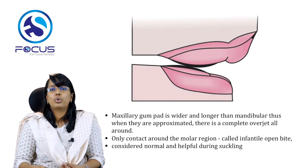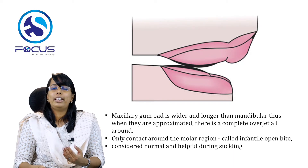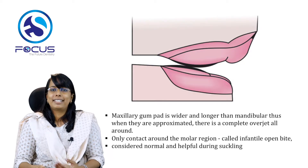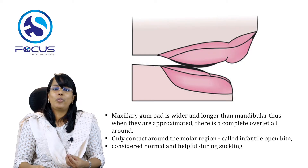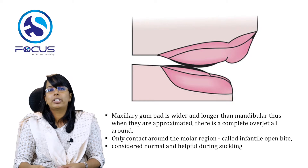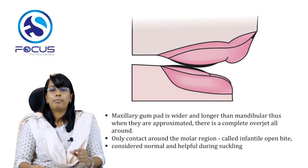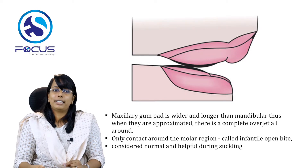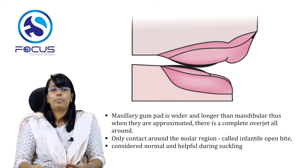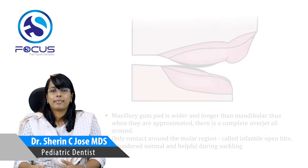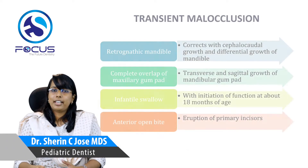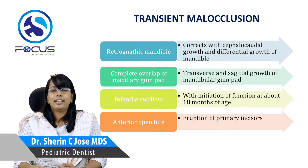When both the upper and lower gum pads occlude, the maxillary gum pad is wider and longer than the mandibular. When approximated, there is a complete overjet all around. Contact occurs only in the posterior or molar region, which is called the infantile open bite. This is considered normal and is helpful during suckling.